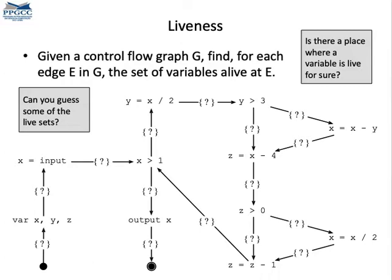Can you try to fill up these sets on the edges with the question marks with the variables that you think are alive at those points? You can stop the video to think about this problem if you want. For instance, which variables are alive at this point here in the red box? It's hard to answer this question without looking at the entire program, but let me simplify the question. Is there any variable that you know for sure that's alive at that point?